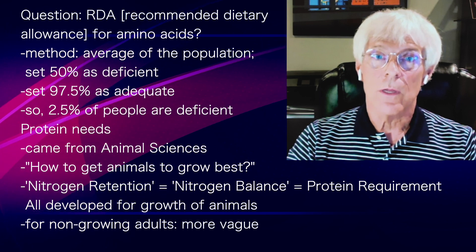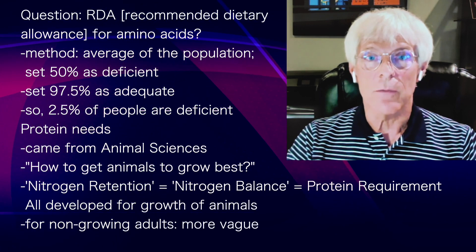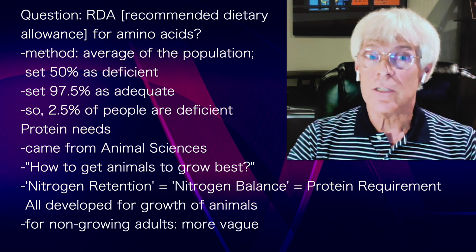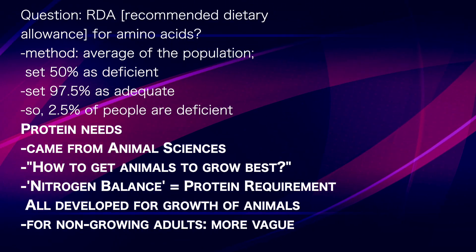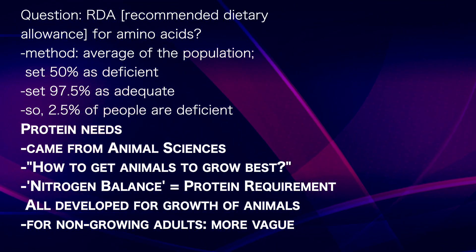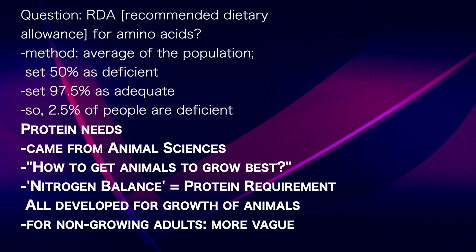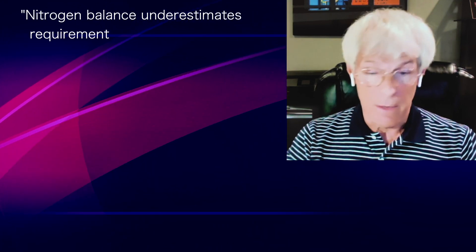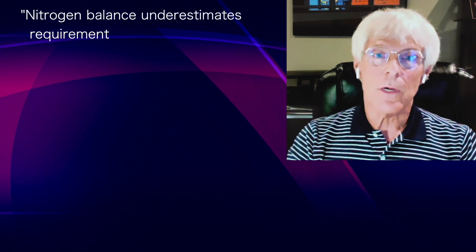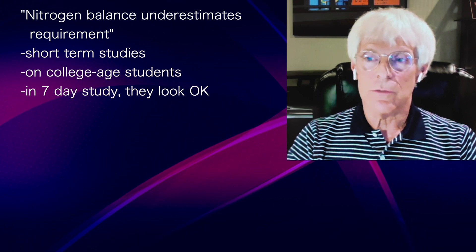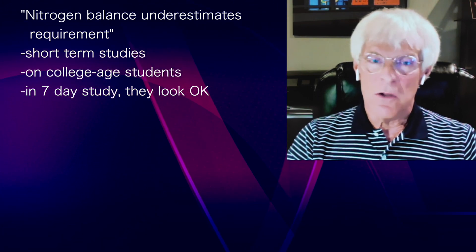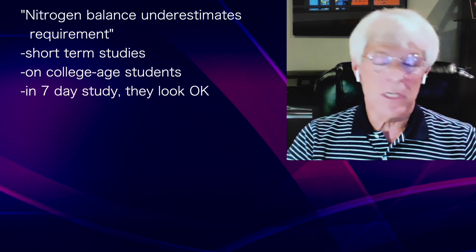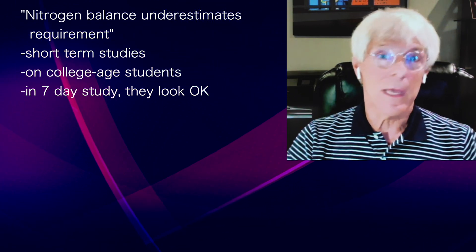All of these concepts were developed for growth, where nitrogen balance was positive and you could measure a change over time. As we've tried to apply that to non-growing adults, it gets a lot more vague. Everyone who knows nitrogen balance agrees that it underestimates requirement — uniformly — but that is where the RDA comes from. Short-term studies, typically seven days with college-age students right at the end of their growth, show most people look okay.